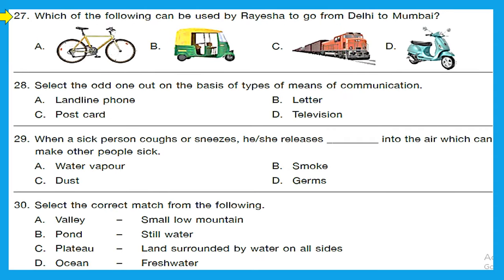Question 27: which of the following can be used by Raisha to go from Delhi to Mumbai — bicycle, auto, train, or scooty? From Delhi to Mumbai is a very long distance, and the right means of transport is option C, train.